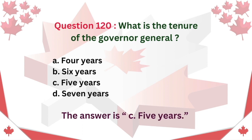Question 120: What is the tenure of the Governor General? A. Four years. B. Six years. C. Five years. D. Seven years. The answer is C: Five years.